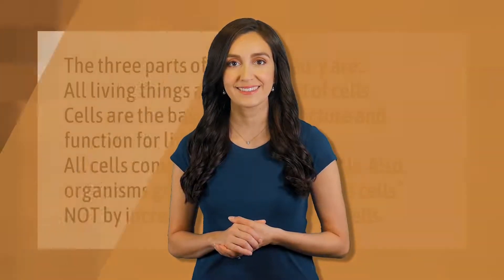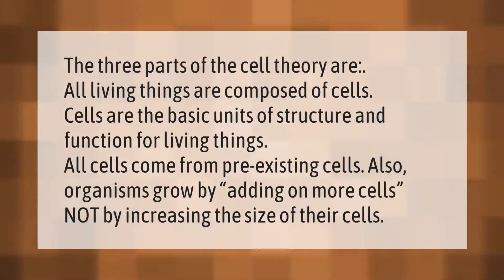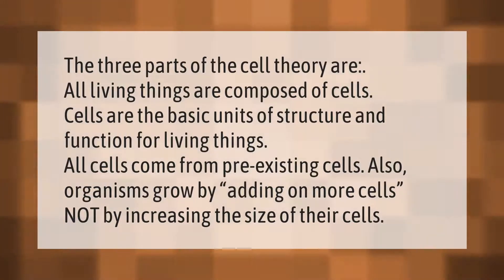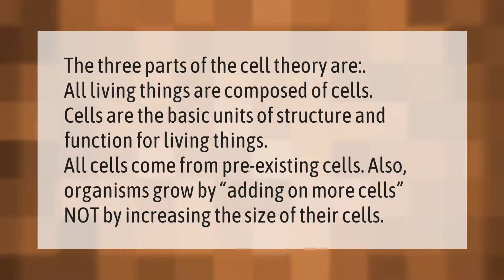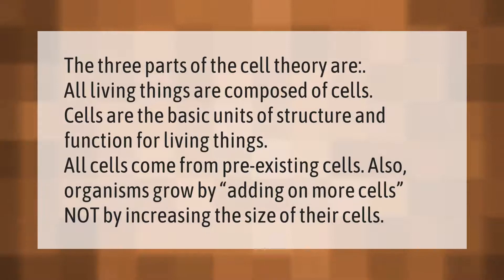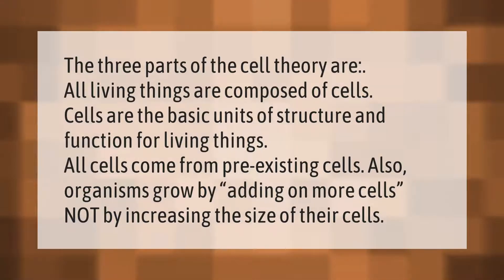The three parts of the cell theory are: all living things are composed of cells; cells are the basic units of structure and function for living things; all cells come from pre-existing cells. Also, organisms grow by adding on more cells, not by increasing the size of their cells.